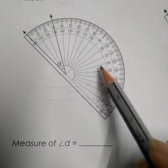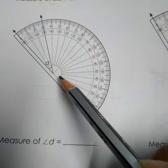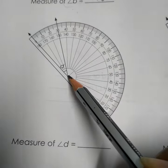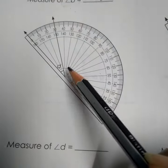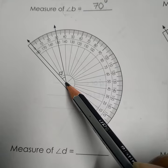Let's measure this angle. This is the vertex of the angle and this is the center of the protractor. They have to coincide with each other.